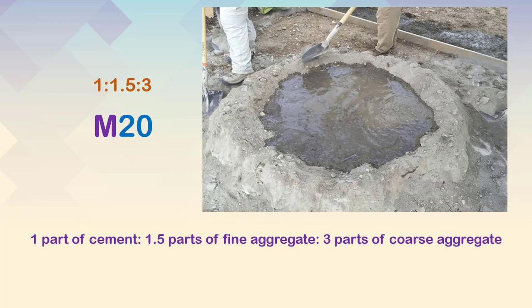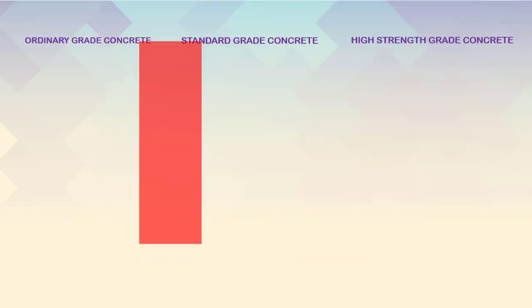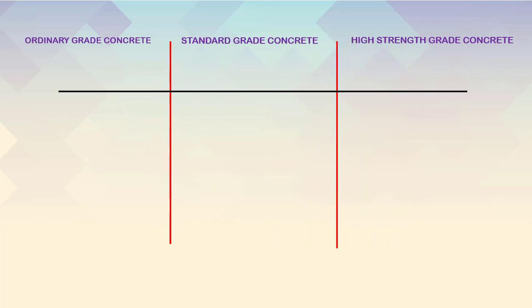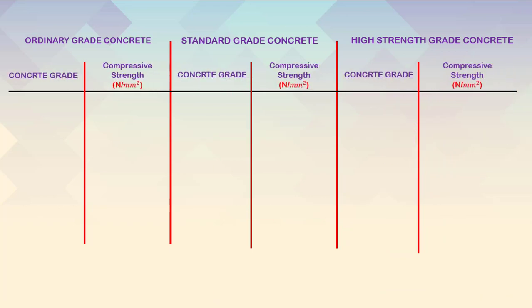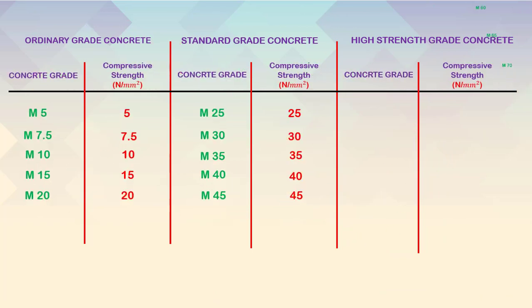As per Indian standard codes, there are three major groups of concrete: ordinary concrete, standard concrete, and high strength concrete. There are a total of 15 grades of concrete, whose compressive strengths are shown on the screen.